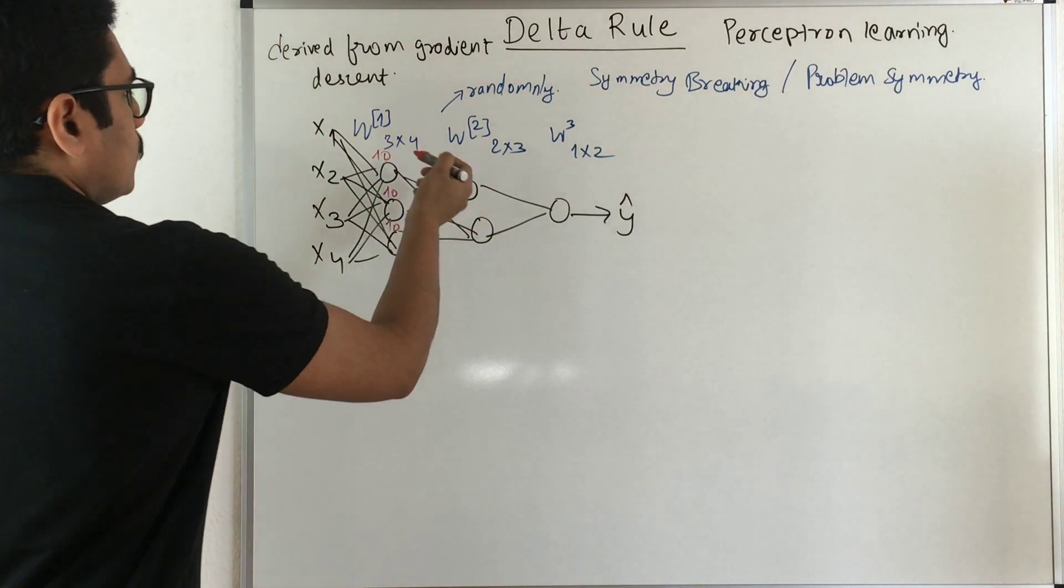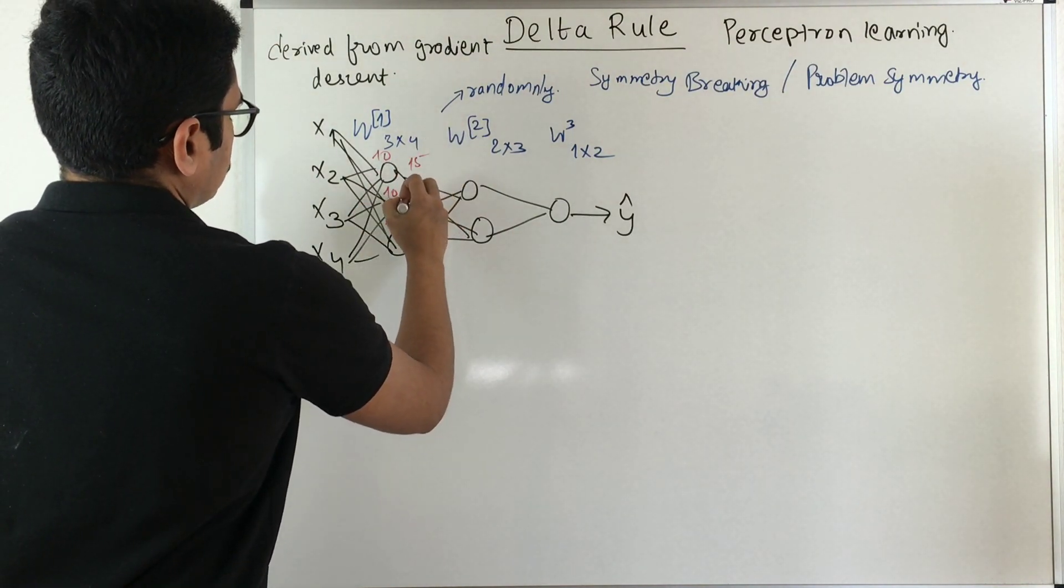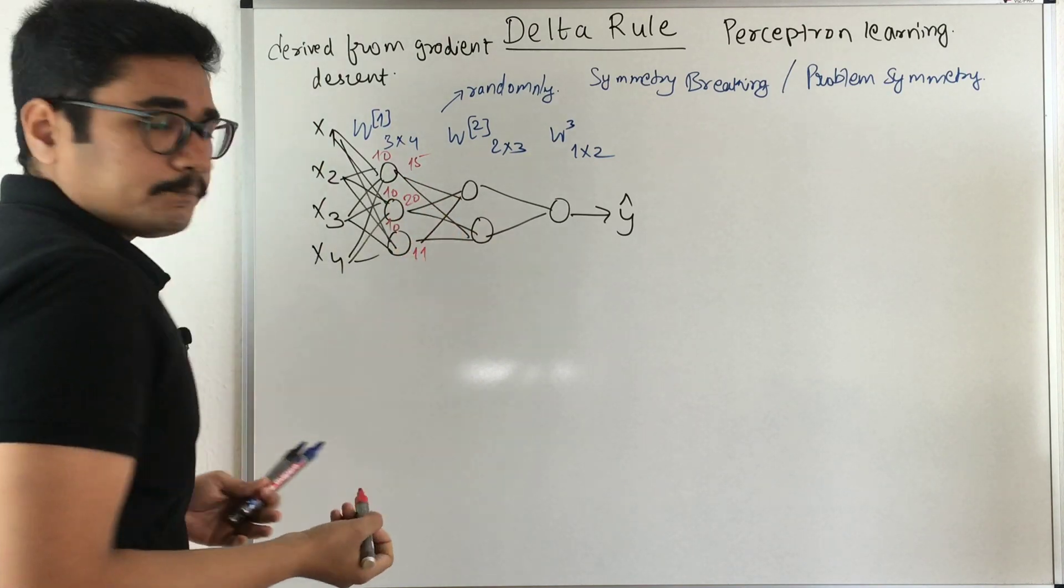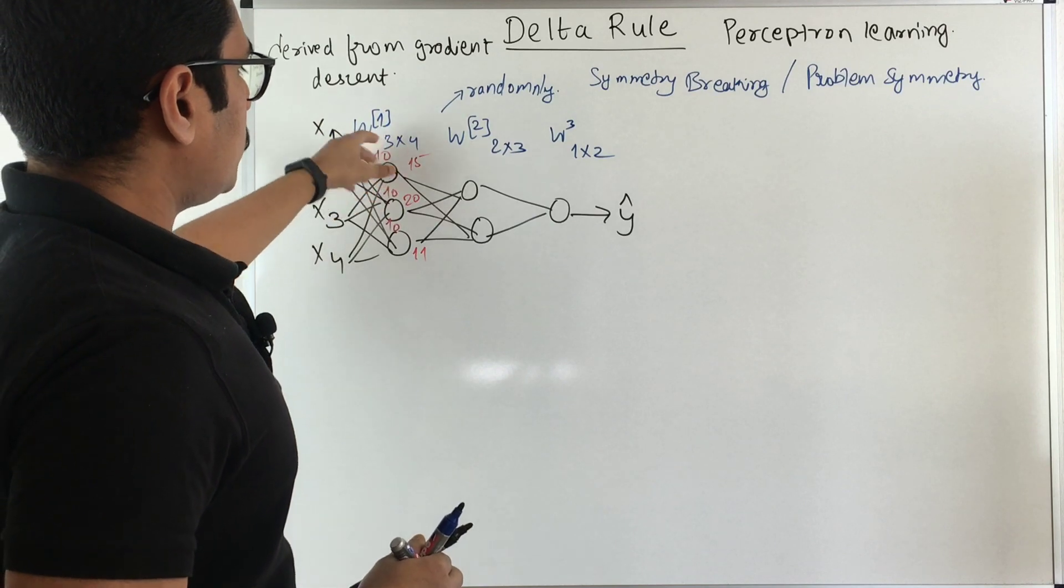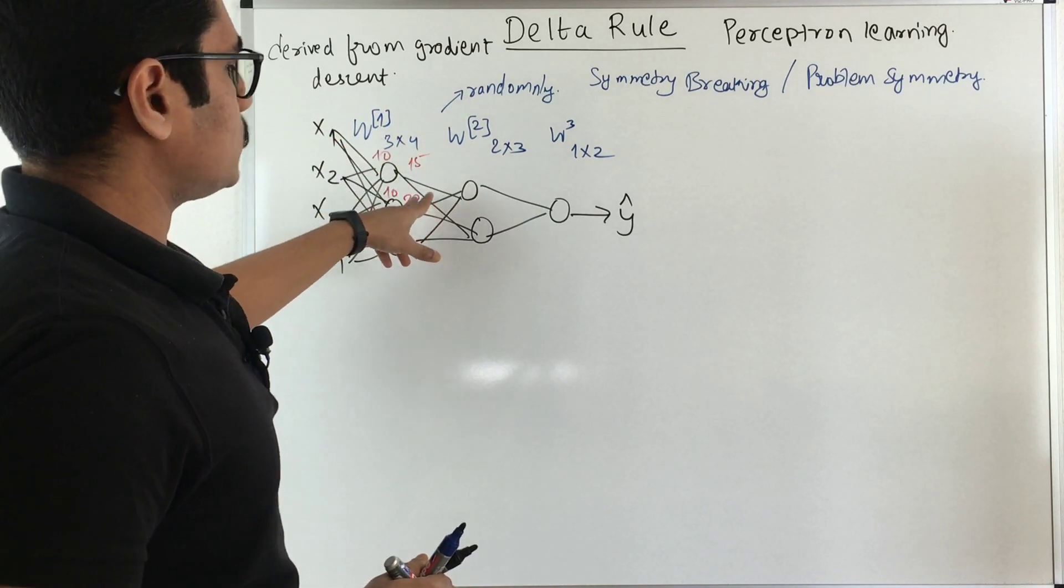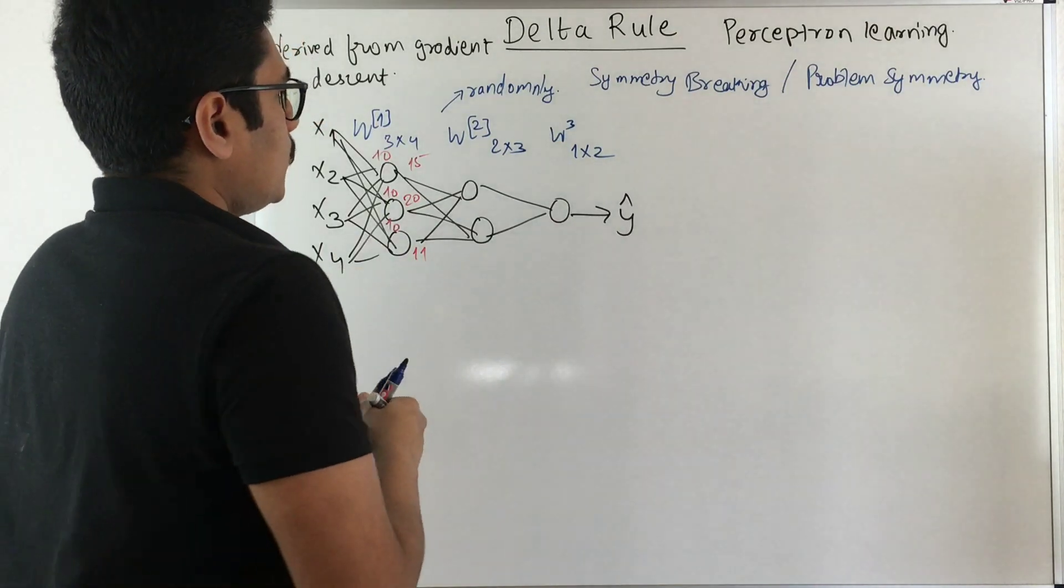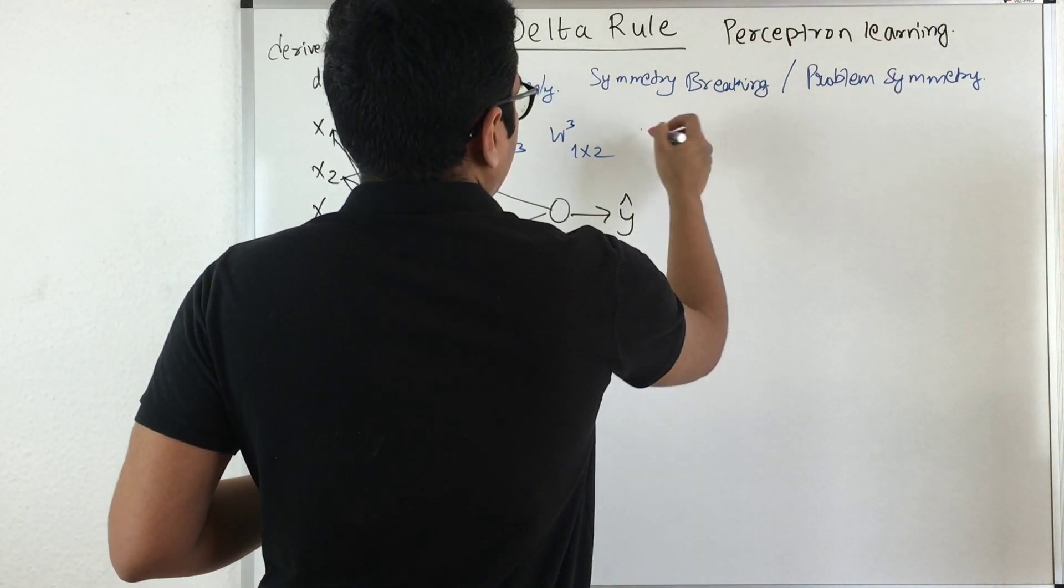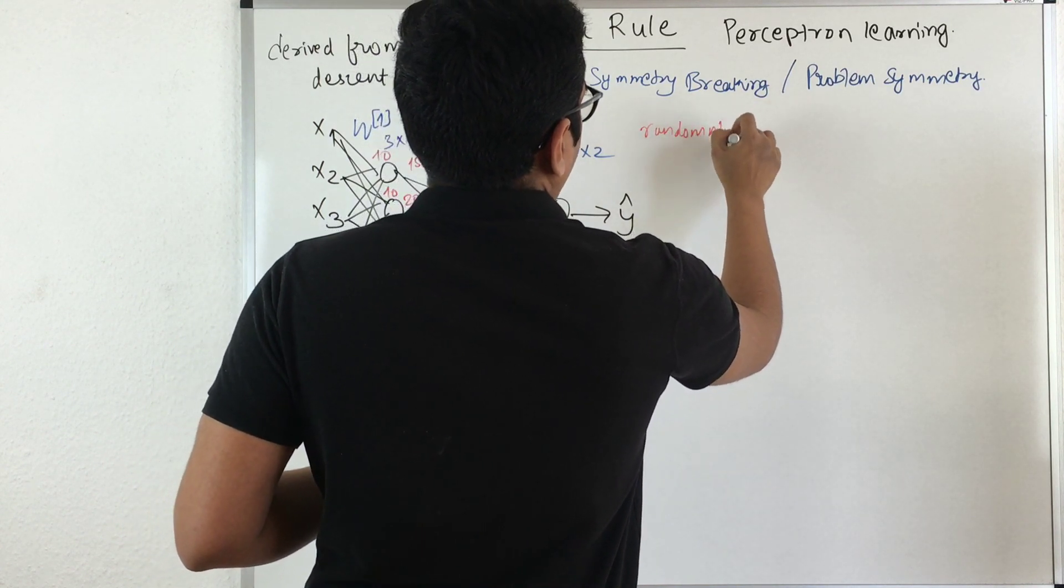But if you assign this as some randomly, say this has got 15, this has got 20, this has got 11, then there becomes a picture of like why this particular weight is assigned 15 or why this has assigned 20 or why this has 11. So this particular problem is mainly contracted with the help of randomly assigning.